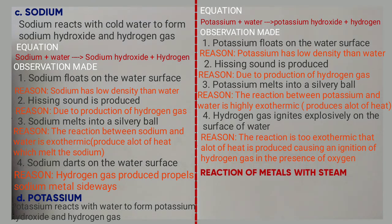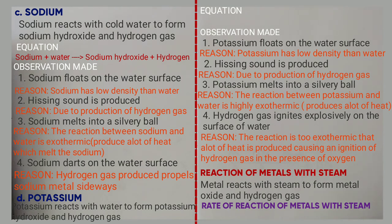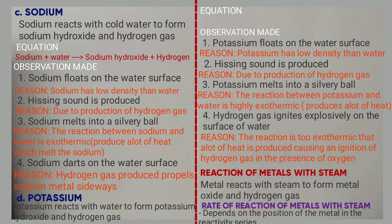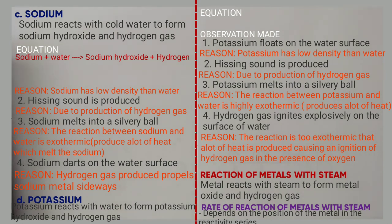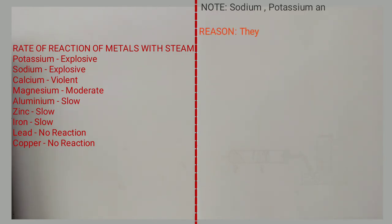Next we look at the reaction of metals with steam. Metals react with steam to form metal oxide and hydrogen gas. The rate at which metals react with steam depends on their position in the reactivity series: potassium and sodium react explosively; calcium — violent; magnesium — moderate; aluminium, zinc, and iron — slow. No reaction occurs with lead and copper. Students should note that sodium, potassium, and calcium should not be reacted with steam because they react explosively. So the first metal considered begins with magnesium.